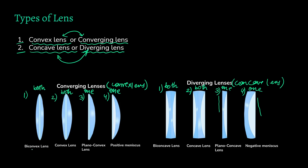Basically, a lens is a transparent material bound by either two spherical surfaces or just one spherical surface; when only one surface is spherical, the other is plain. How do we name these lenses? You can see names written here: biconvex lens, convex lens, plano-convex lens, and positive meniscus. Looking at the biconvex and the convex lens, they look pretty much the same — can you spot the small difference between them?